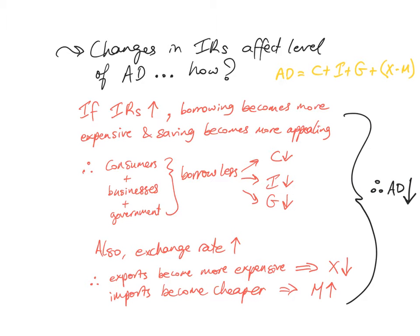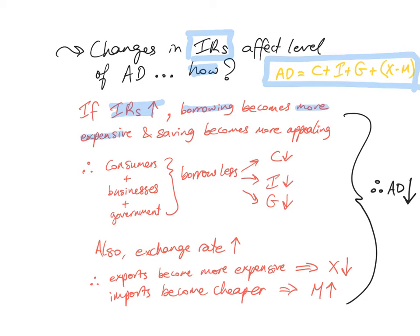Changes in interest rates — from now on if I write IRS I'm talking about interest rates — affect the level of aggregate demand. Recall that aggregate demand equals C plus I plus G plus X minus M. If interest rates rise, borrowing becomes more expensive and saving becomes more appealing, so consumers will borrow less, therefore C decreases; businesses will borrow less, therefore I decreases; and the government will borrow less, therefore G decreases.